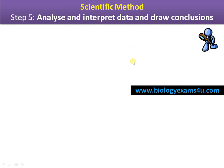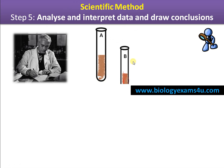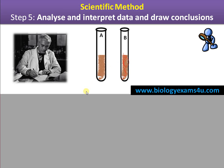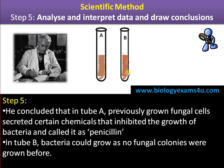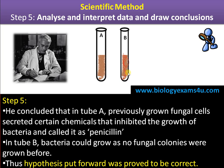Step 5: Analysis and interpretation of data, and drawing conclusions. Fleming concluded that in tube A, the previously grown fungal cells secreted certain substances that inhibited bacterial growth, and he called it penicillin, as the mold was identified as Penicillium notatum. In tube B, bacteria could grow as no fungal colonies had been grown before. The hypothesis was proved to be correct.